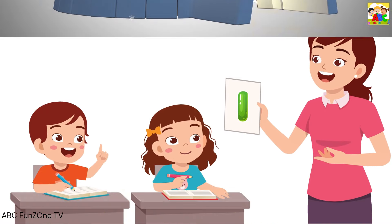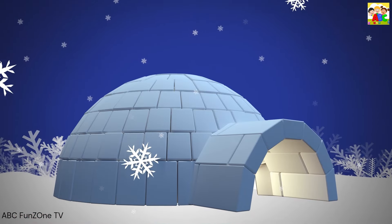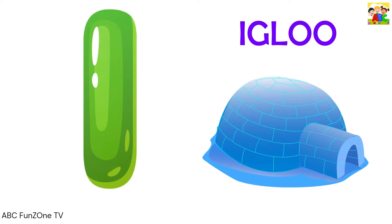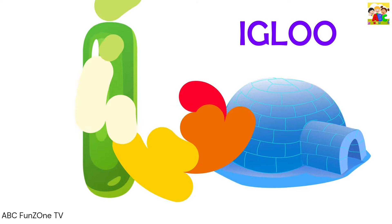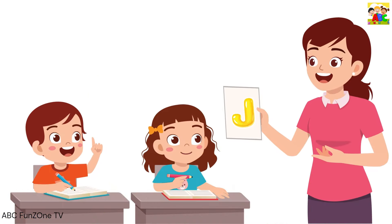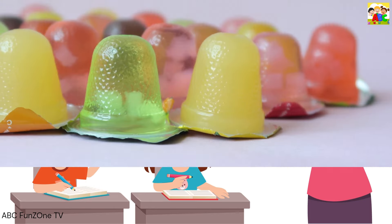G is for Glasses, G-G-Glasses, G-Glasses. H is for Hand, H-H-Han. I is for Igloo, I, igloo.